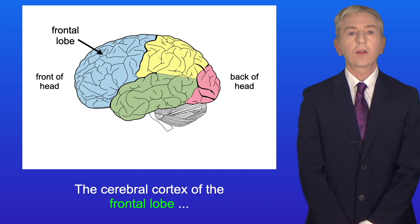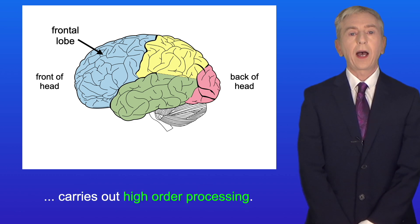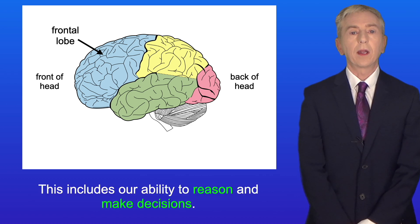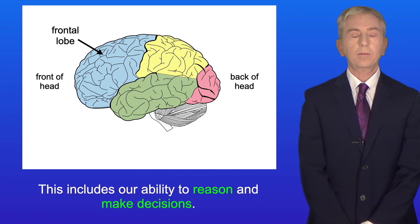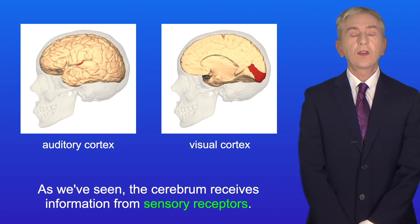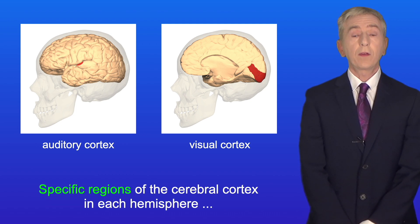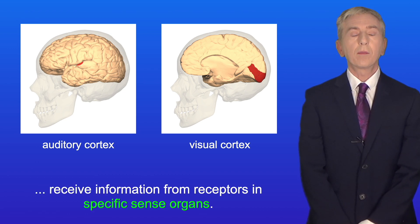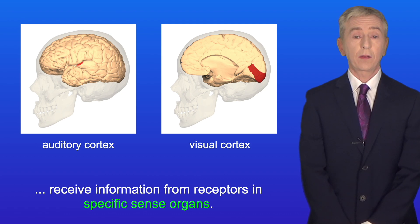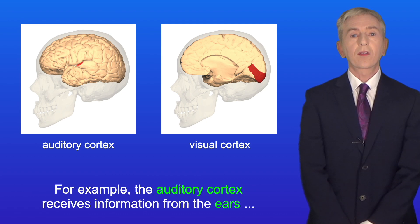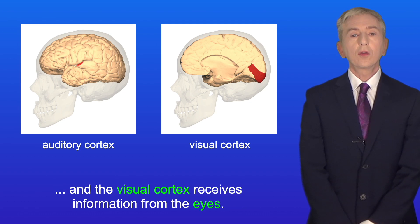The cerebral cortex of the frontal lobe carries out high-order processing, including our ability to reason and make decisions. Specific regions of the cerebral cortex in each hemisphere receive information from receptors in specific sense organs. For example, the auditory cortex receives information from the ears, and the visual cortex receives information from the eyes.